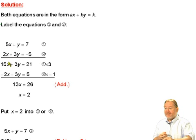So 3 times 5x is 15x, 3 times y is 3y, and 3 times 7 is 21. Each part of equation number 1 has been multiplied by 3.